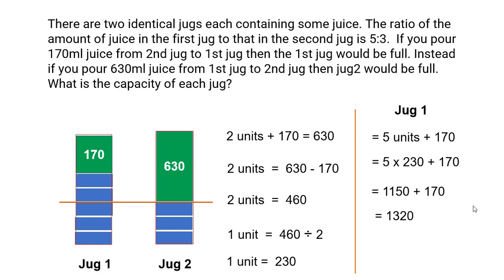Now we know that the two jugs are of the same capacity. So capacity of jug 1 and jug 2 is 1320 ml.